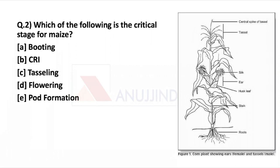The next important question: which of the following is the critical stage for maize? The critical stage means the time when the crop needs supervision at its highest — when the crop needs the most care. The tasseling stage is the critical stage for maize. The tassel represents the male flower on the corn plant, while the ear shoots represent the female flower. The growth of the tassel is the critical stage for maize because of germination.